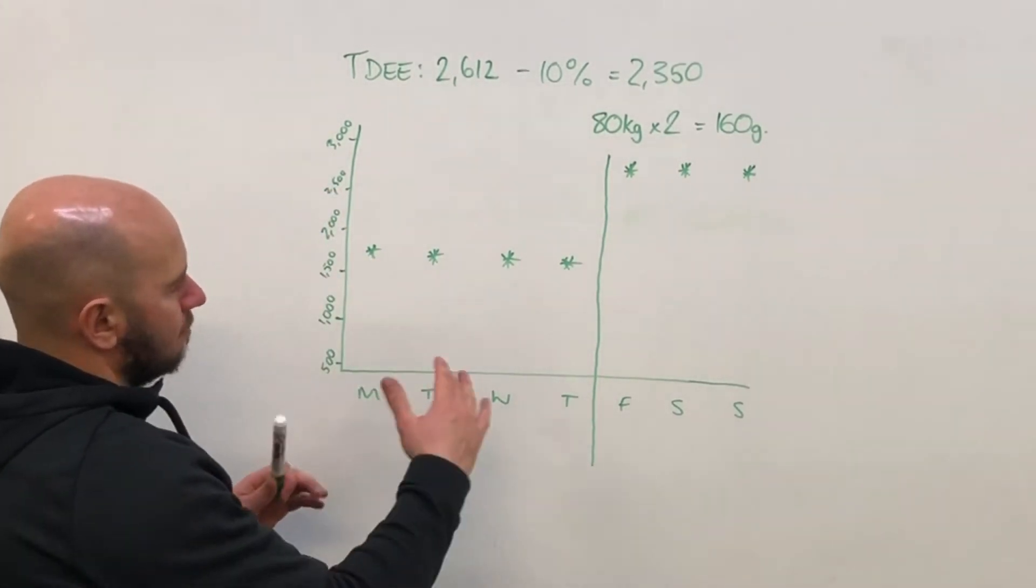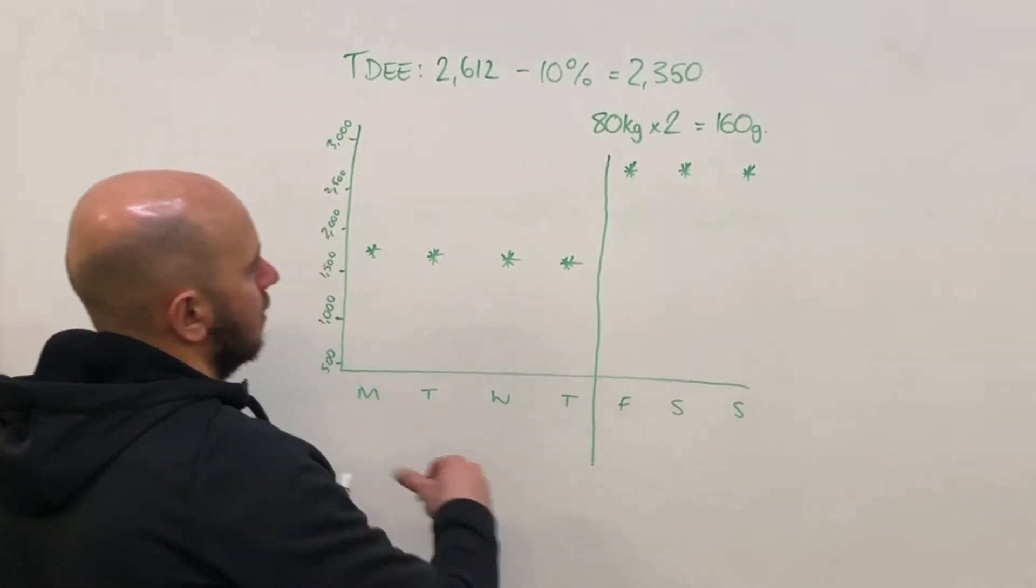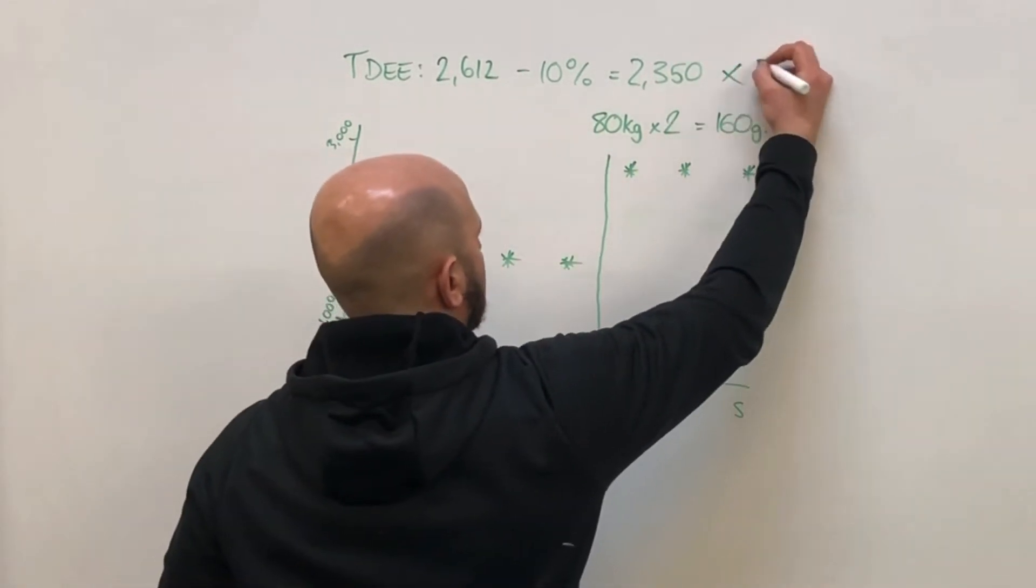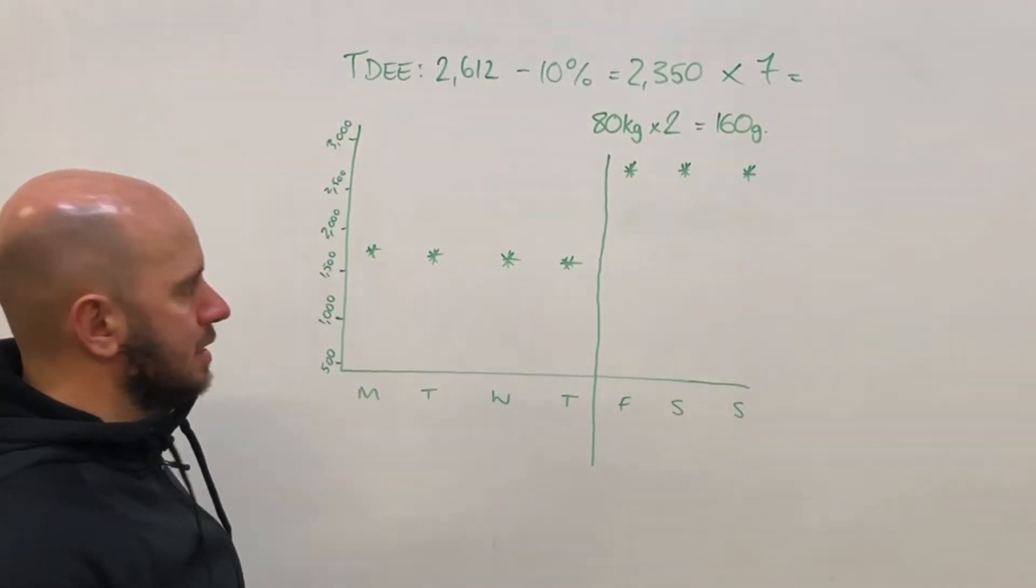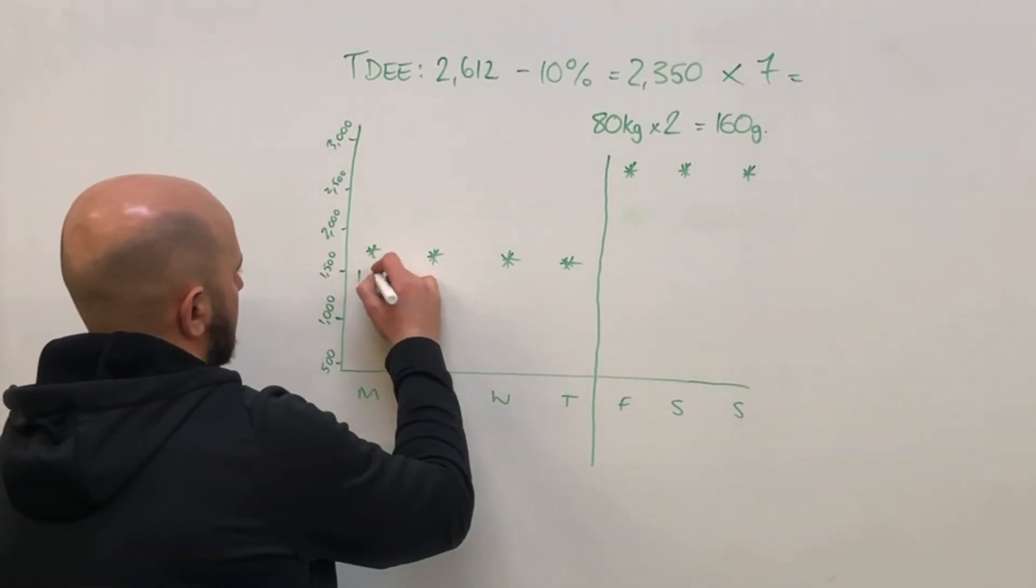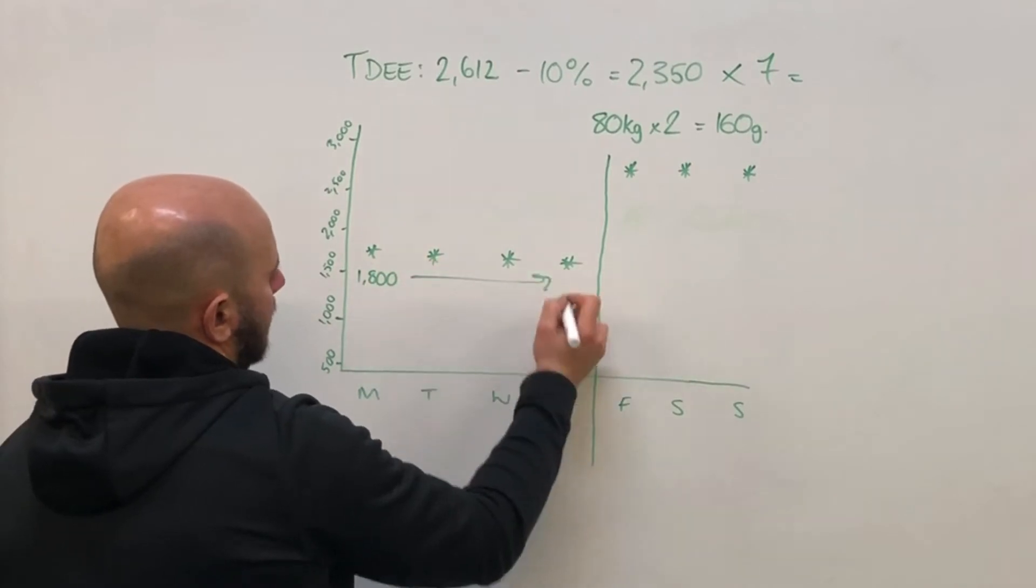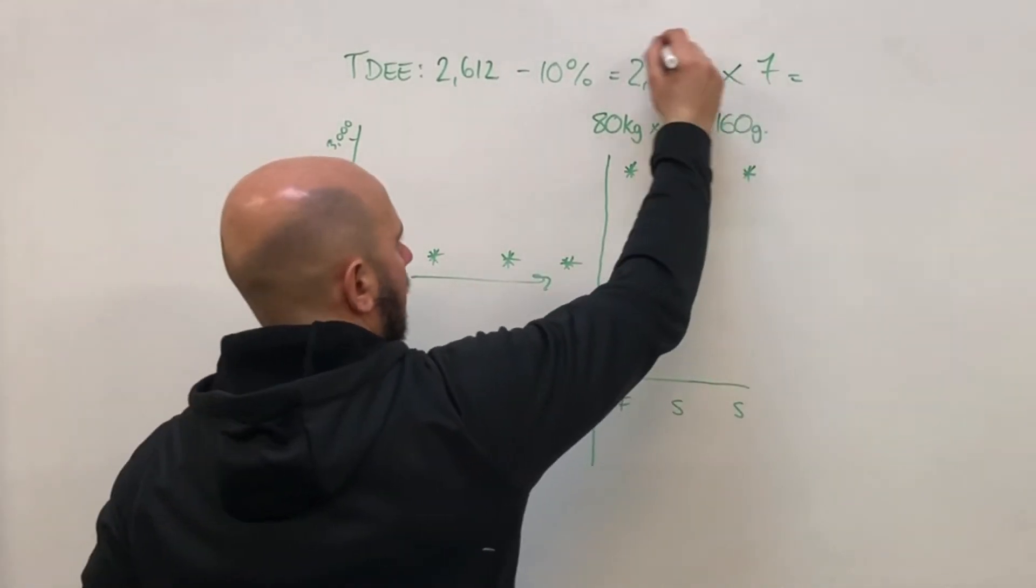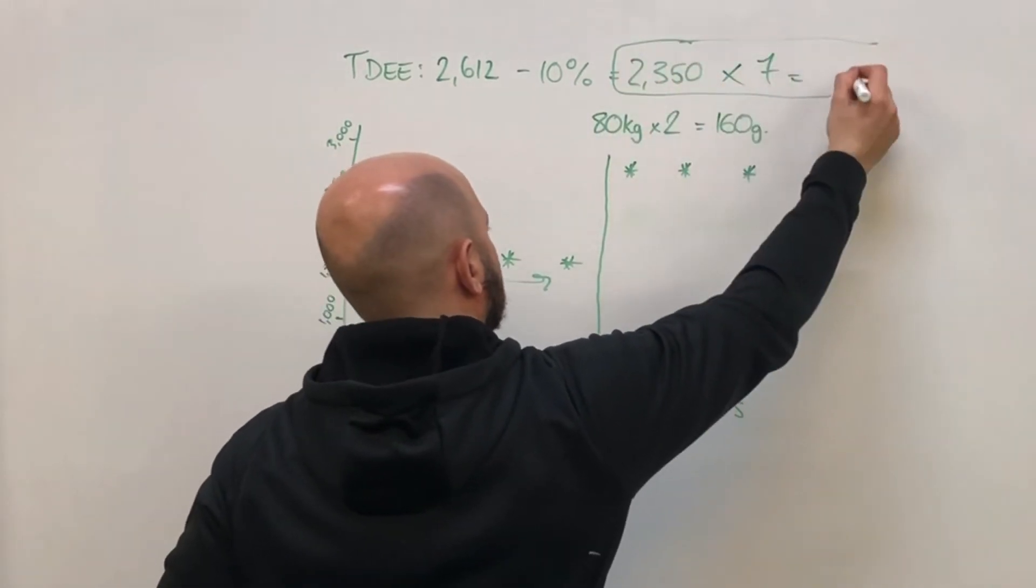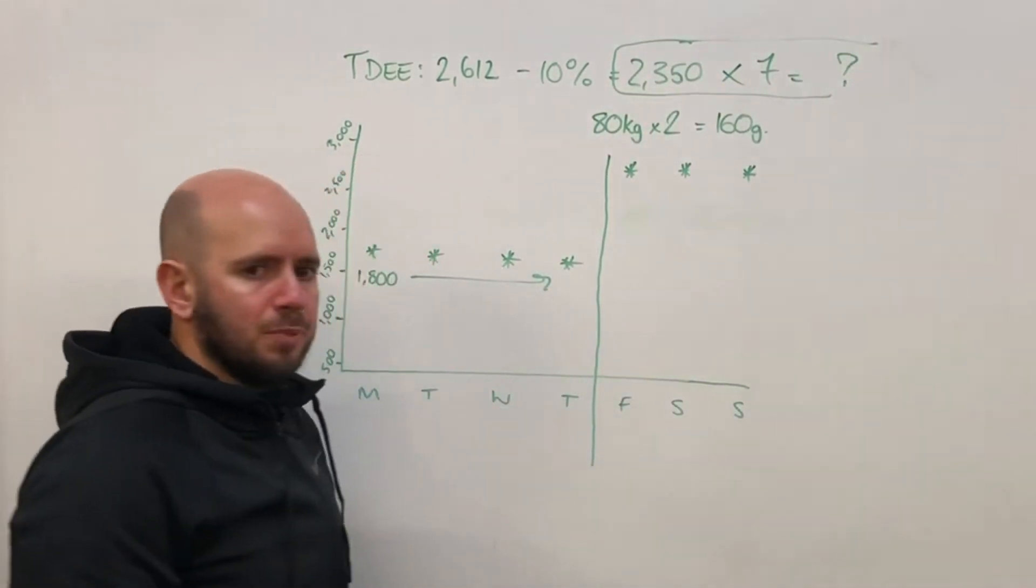So whilst calories can be fluctuated, providing that we end up with our figure after seven days of being the same, we've got maybe 1,800 across the board here, and then a little bit higher up there. As long as those figures end up being that times by seven, we're in a good place.